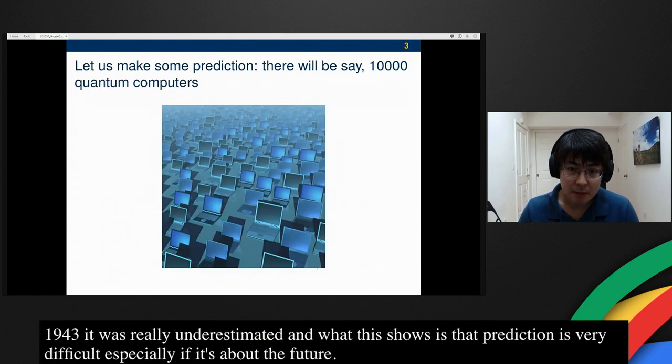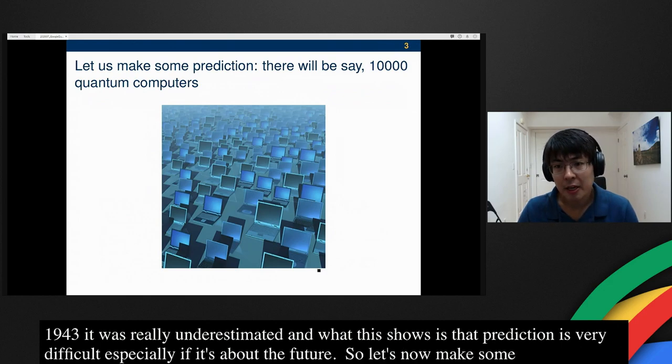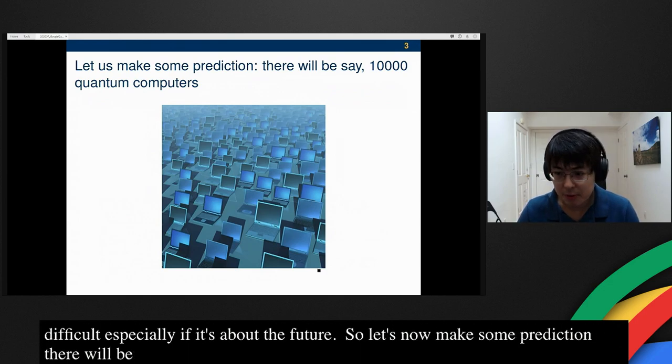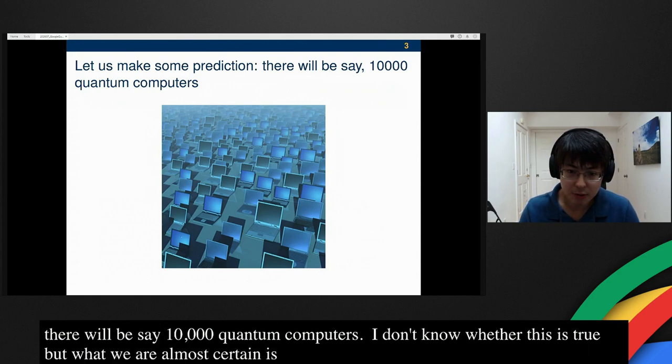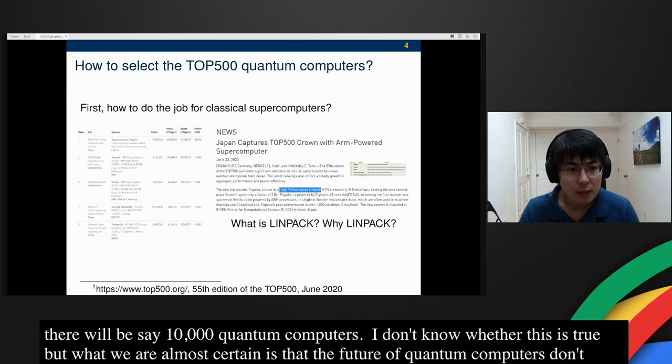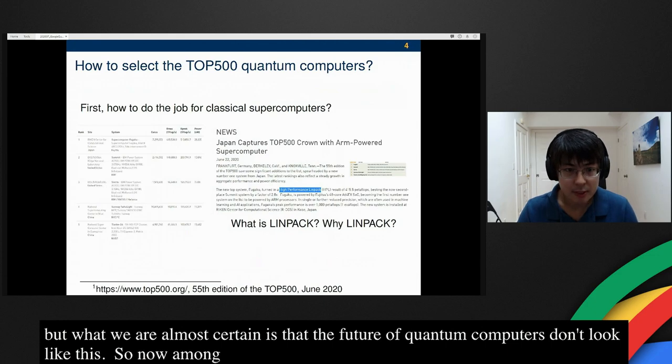So let's now make some prediction. It will be say 10,000 quantum computers. I don't know whether this is true, but what we're almost certain is that the future quantum computers don't look like this. So now among the 10,000 quantum computers, we want to select the top 500. How do we do the job?